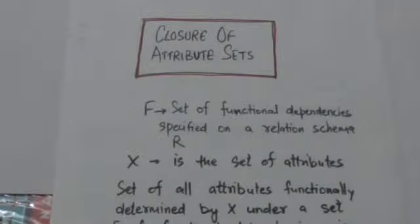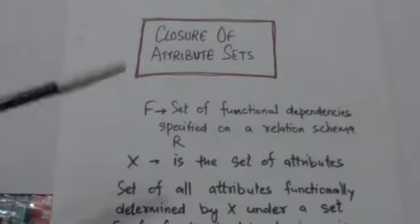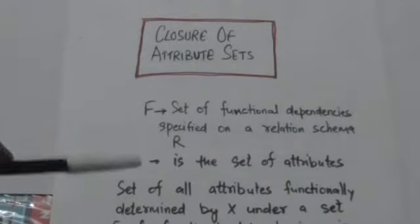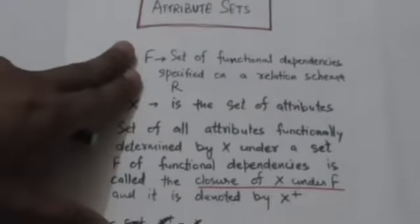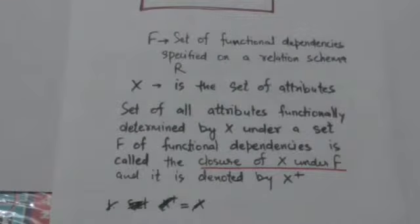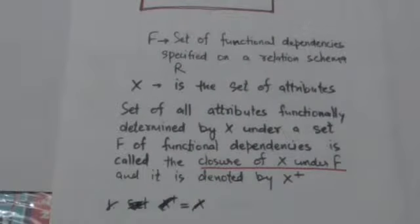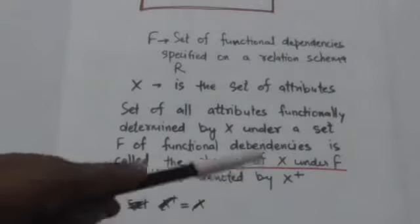Hello friends, welcome back. In this tutorial we will study about closure of attribute sets. Suppose there is a set of functional dependencies F specified on a relation schema R. Let X be a set of attributes. Then the set of all attributes functionally determined by X under F is called the closure of X under F, and it is denoted by X+.